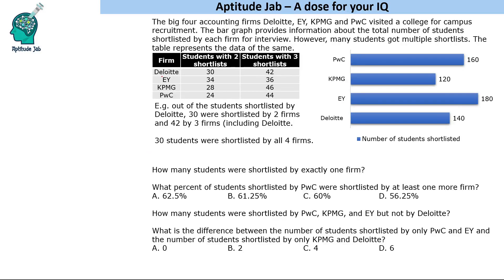How to read the table: for Deloitte, students with two shortlists is 30, and students with three shortlists is 42. So out of all students shortlisted by Deloitte, 30 had two shortlists and 42 had three shortlists. Similarly, data for EY, KPMG, and PWC is given. It is also given that 30 students were shortlisted by all four firms.